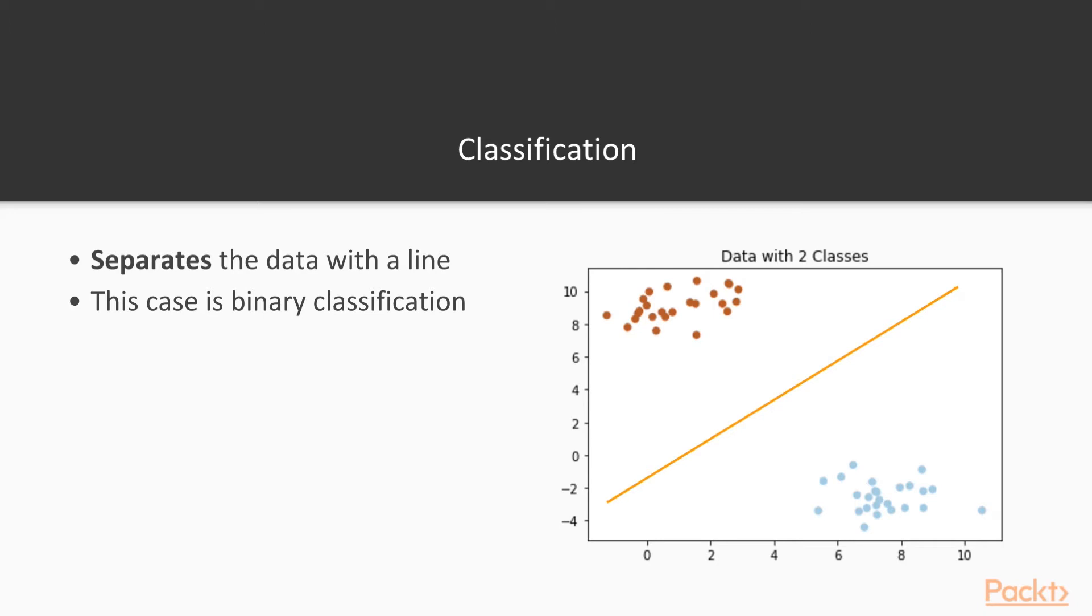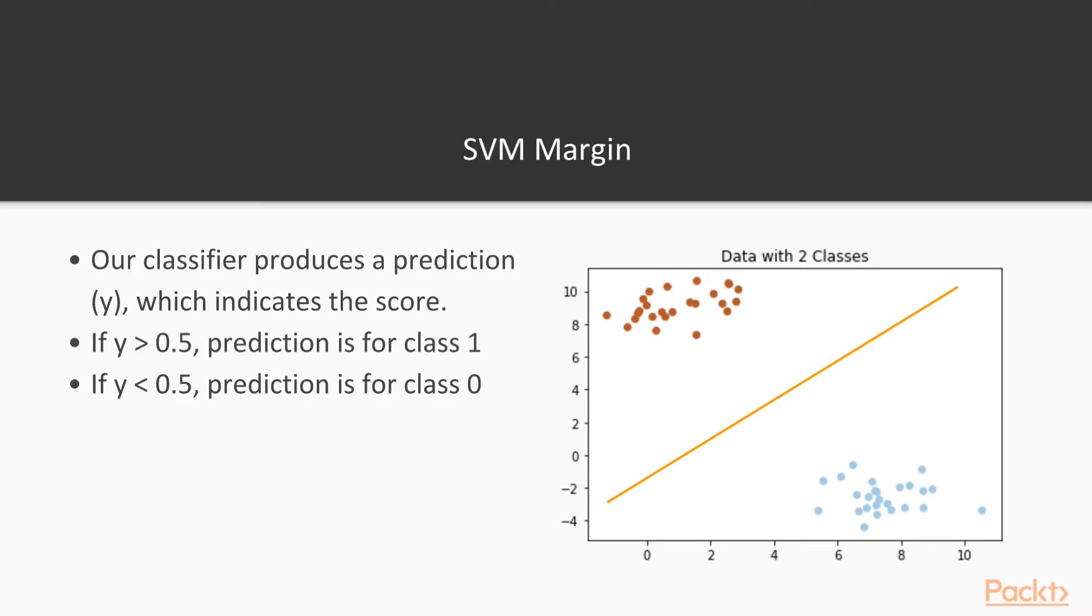But classification extends to many classes. So in this scenario, we produce a line and points that fall above this line or to a certain side of this line fall into one class. And if they fall on the other side, we say that falls into another class. So we'll call these classes class one and class zero.